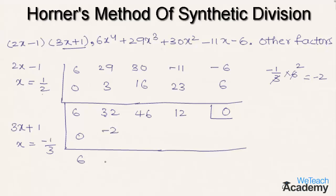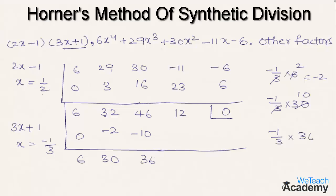So 32 - 2 = 30. Multiplying -1/3 by 30: 3×1=3 and 3×10=30, so -1×10 = -10. Writing -10 below the third row, 46 - 10 = 36. Multiplying -1/3 by 36: 3×1=3 and 3×12=36, so -1×12 = -12. Writing -12 below the fourth element of the third row, 12 - 12 = 0.